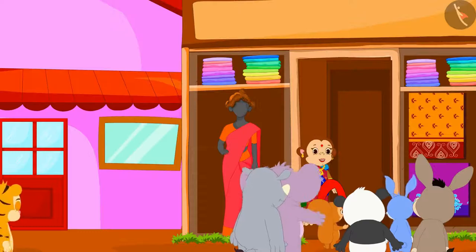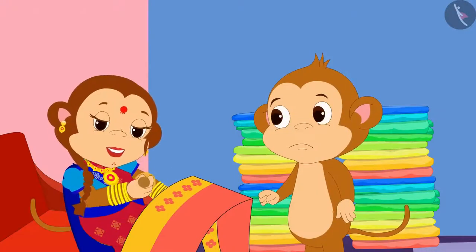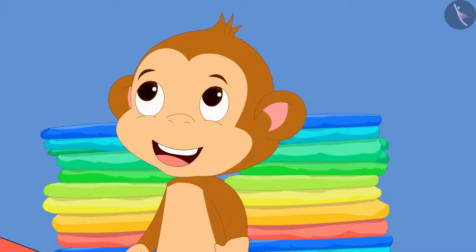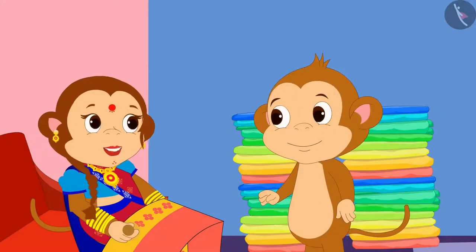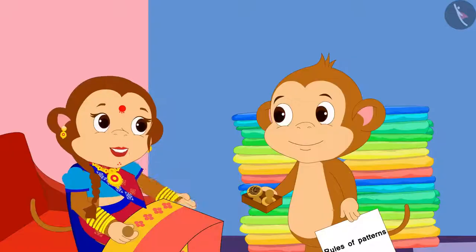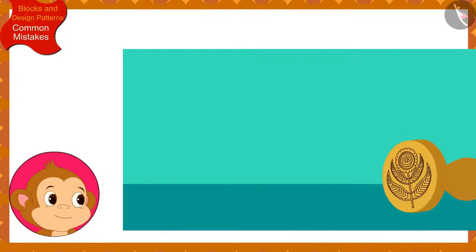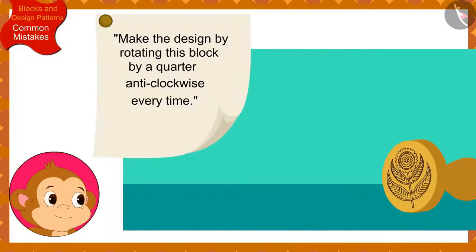Banno's saree shop is going very well. Every day, seeing Banno making designs on so many sarees, Babban thought why not give Banno a little help? Babban, I will write the rules of the pattern you need to make on the sarees on a piece of paper for you. You only need to use these blocks and make the designs according to that rule, Banno told Babban. Babban has to make the design using this block according to this rule on the first saree: make the design by rotating this block by a quarter anti-clockwise every time.